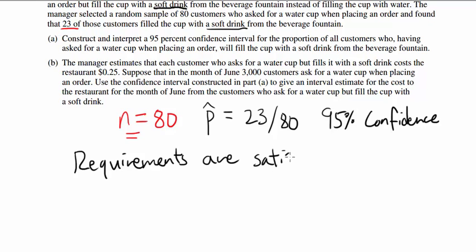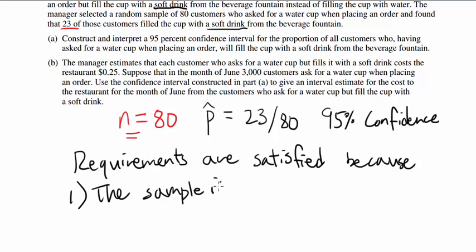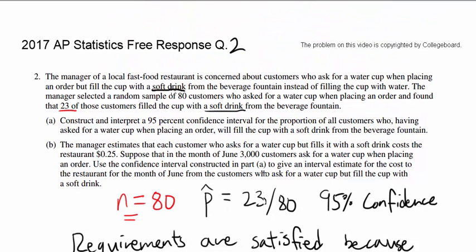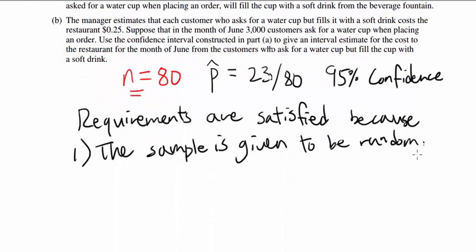The requirements are satisfied because: One, the sample is given to be random. That's very important. Where did it say it's random? Random sample of 80 customers. So they tell you. That's the first one.